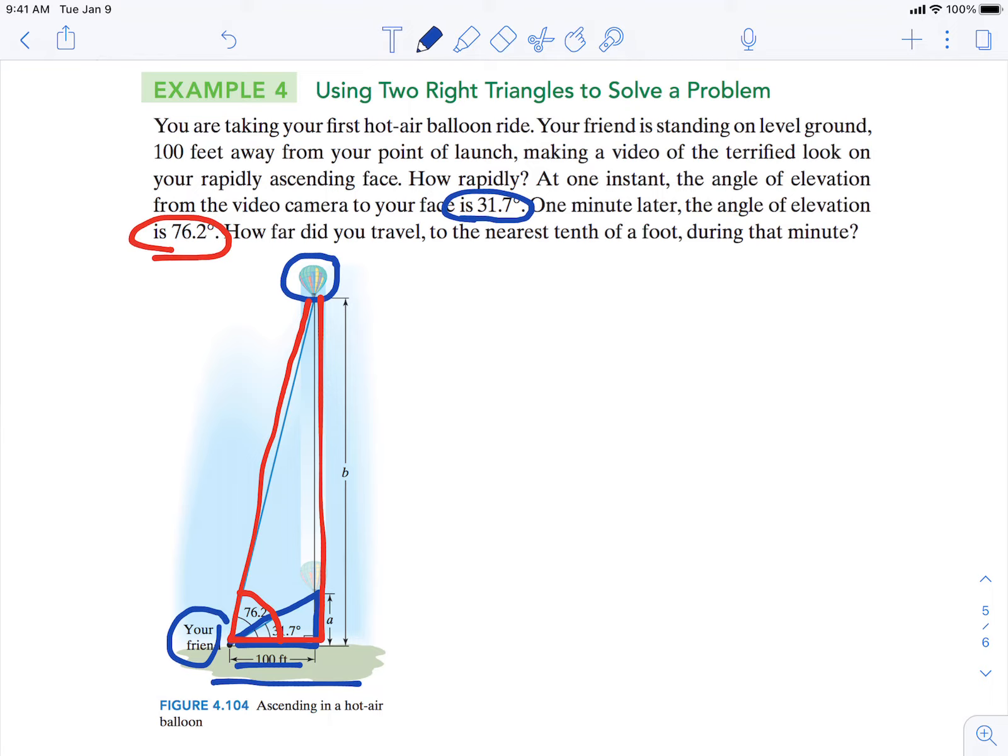So I'm going to first work with the smaller triangle in blue. We have this angle of elevation of 31.7 degrees. We have a height of A.